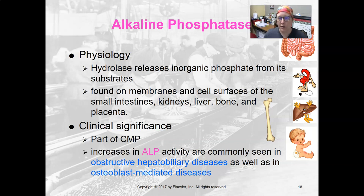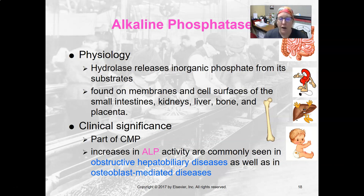Alkaline phosphatase is your other liver enzyme, also present on the CMP and the liver function test. It's a hydrolase that releases inorganic phosphate from the substrate. Alkaline phosphatase is found in the small intestine, kidneys, liver, bone, and placenta. Increases in alkaline phosphatase are seen in obstructive hepatobiliary diseases. It is not found in the hepatocytes — it is found in the biliary tract. So when alkaline phosphatase is high and you suspect liver issues, you're looking at the biliary tracts, maybe bile duct stones, gallstones, something like that.